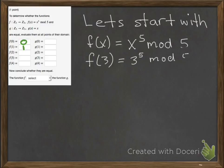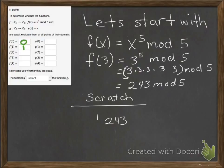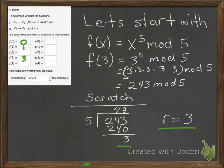We evaluate f of 3: 3 to the fifth mod 5 equals 3 × 3 × 3 × 3 × 3 mod 5, which equals 243 mod 5. Scratch work: 5 goes into 243 forty-eight times; 5 times 48 is 240, giving a remainder of 3. So 243 mod 5 equals 3. We write that in.